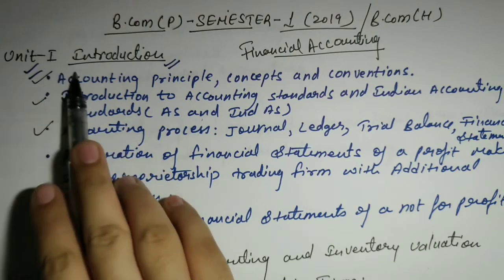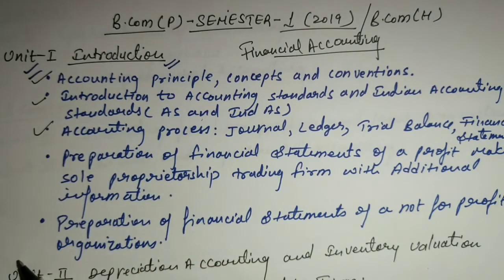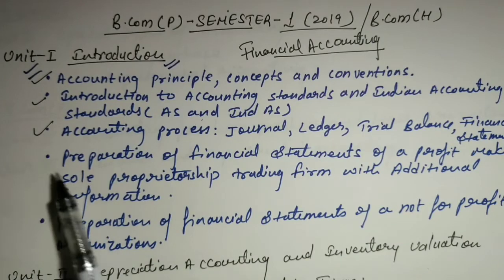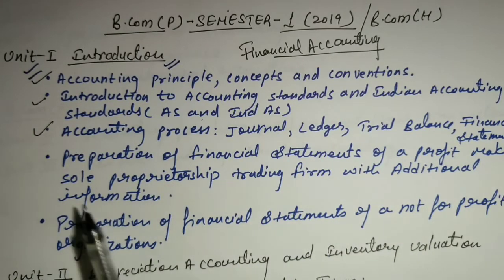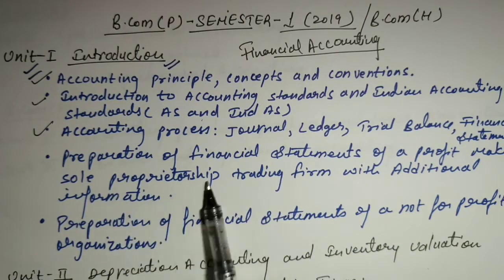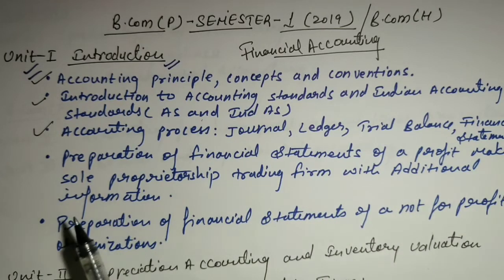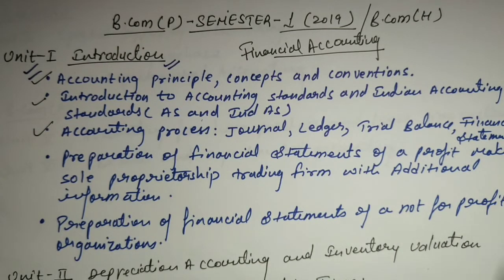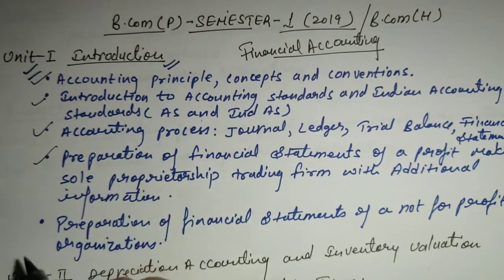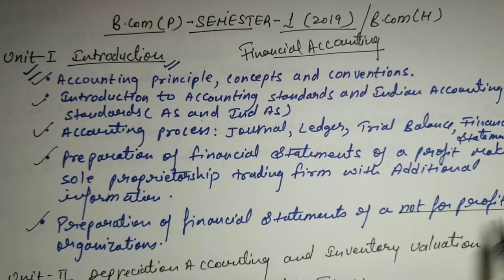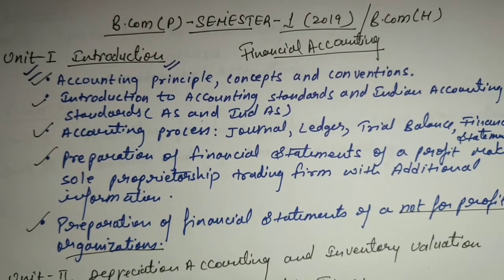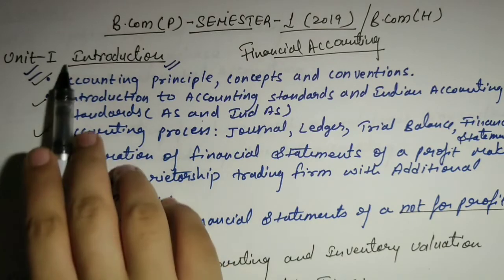This is a unit, and in the unit there are many chapters. This includes the preparation of financial statements of a profit-making sole proprietorship trading firm with additional information. This is a unit you need to cover. So this is Unit 1, and there are many chapters included in this unit, applicable to both BCom Program and BCom Honors.